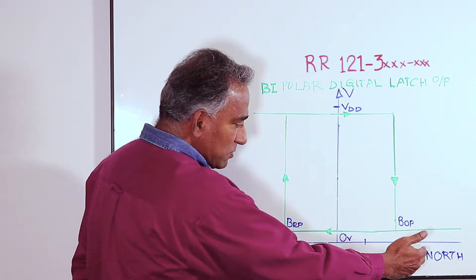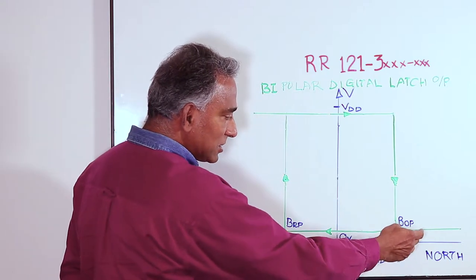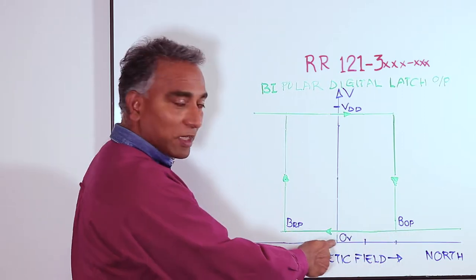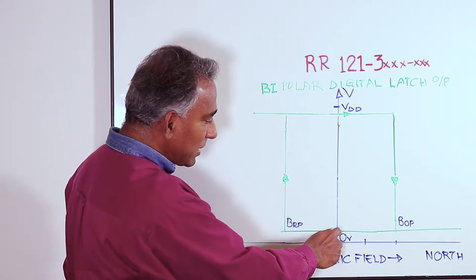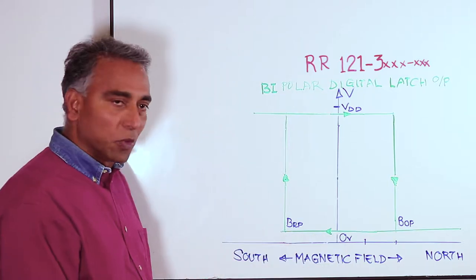When the magnet moves away and the north pole field strength decreases, the output profile follows this line until the magnet is very far away and the field strength is zero. At that time the output remains at a digital low condition.